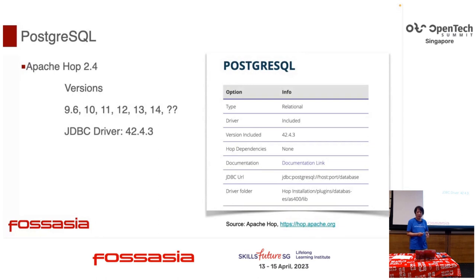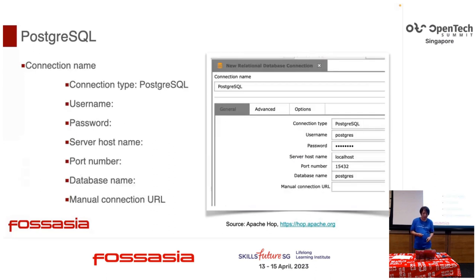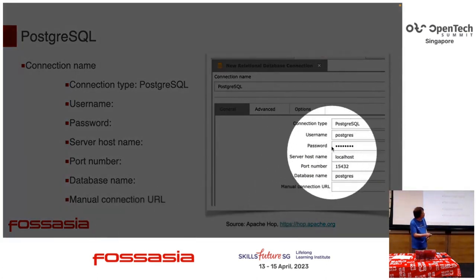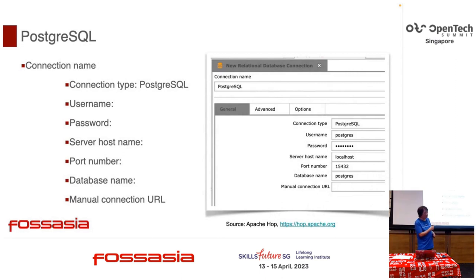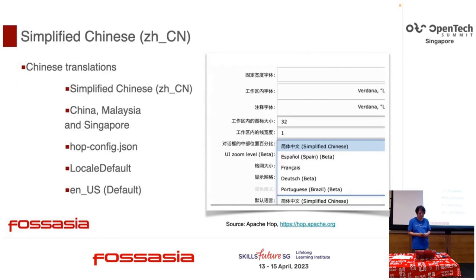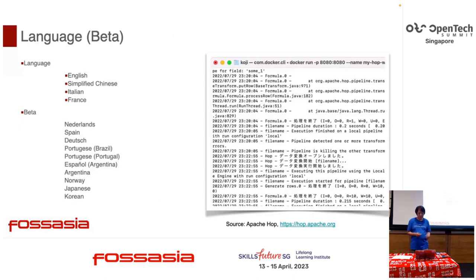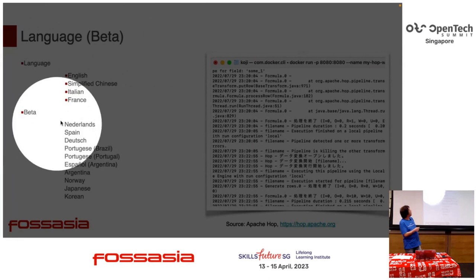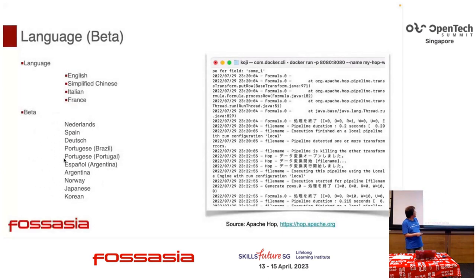Here is a sample Postgres interface. It has a JDBC driver for version 42.4.3 and you can configure it just like this — you can use Postgres. We also have a lot of languages supported: simplified Chinese, English, Italian, French, and beta versions include Japanese and Korean.